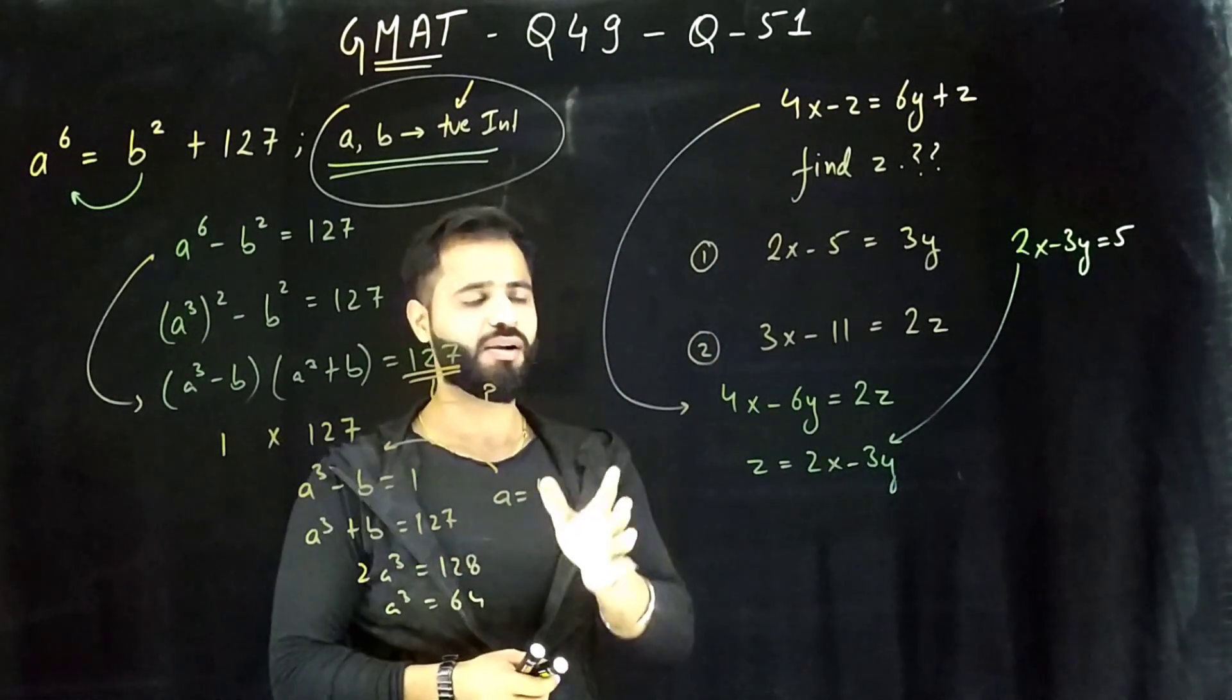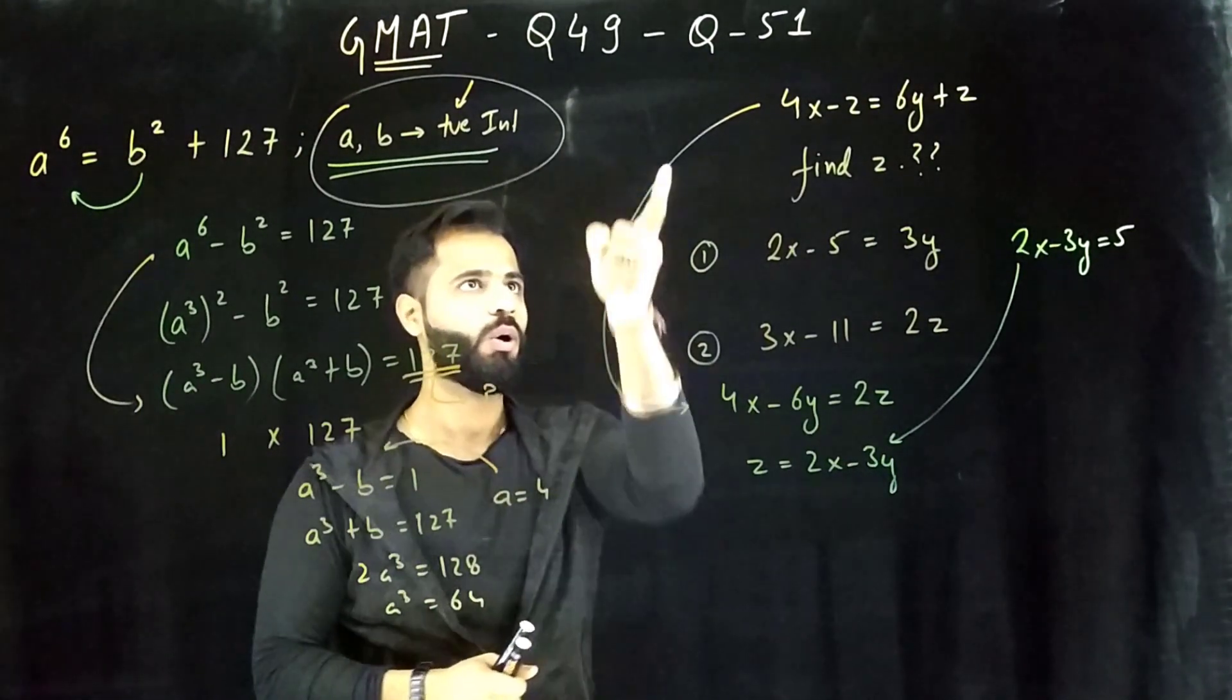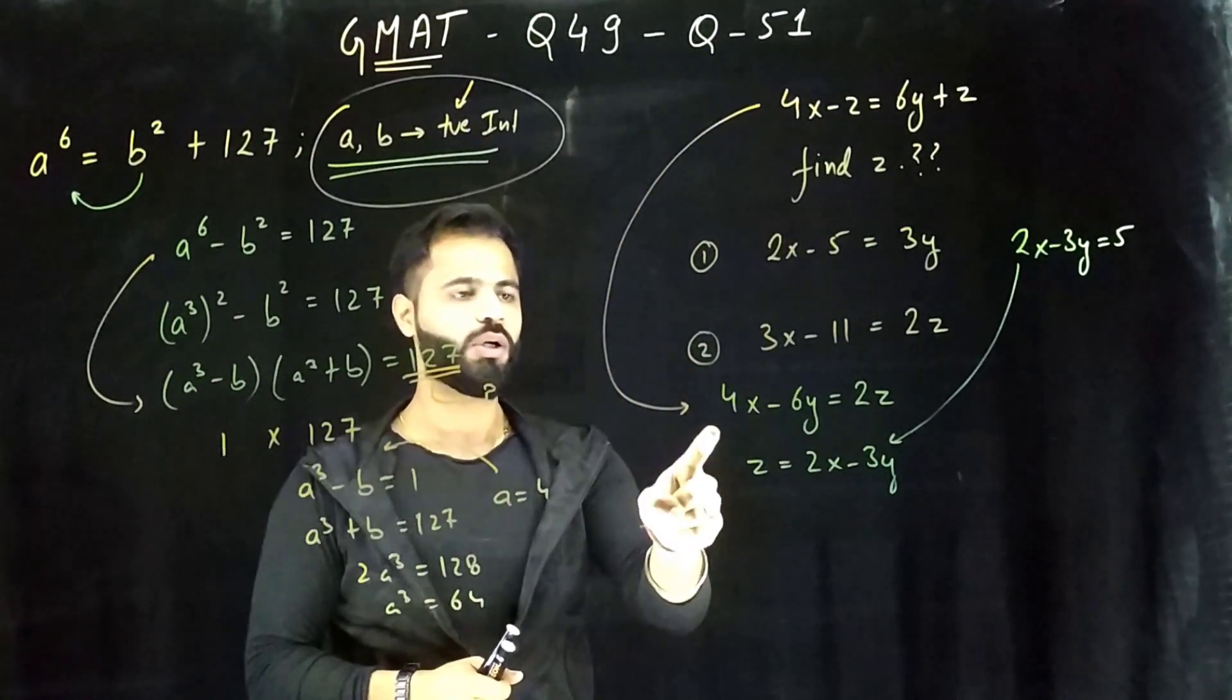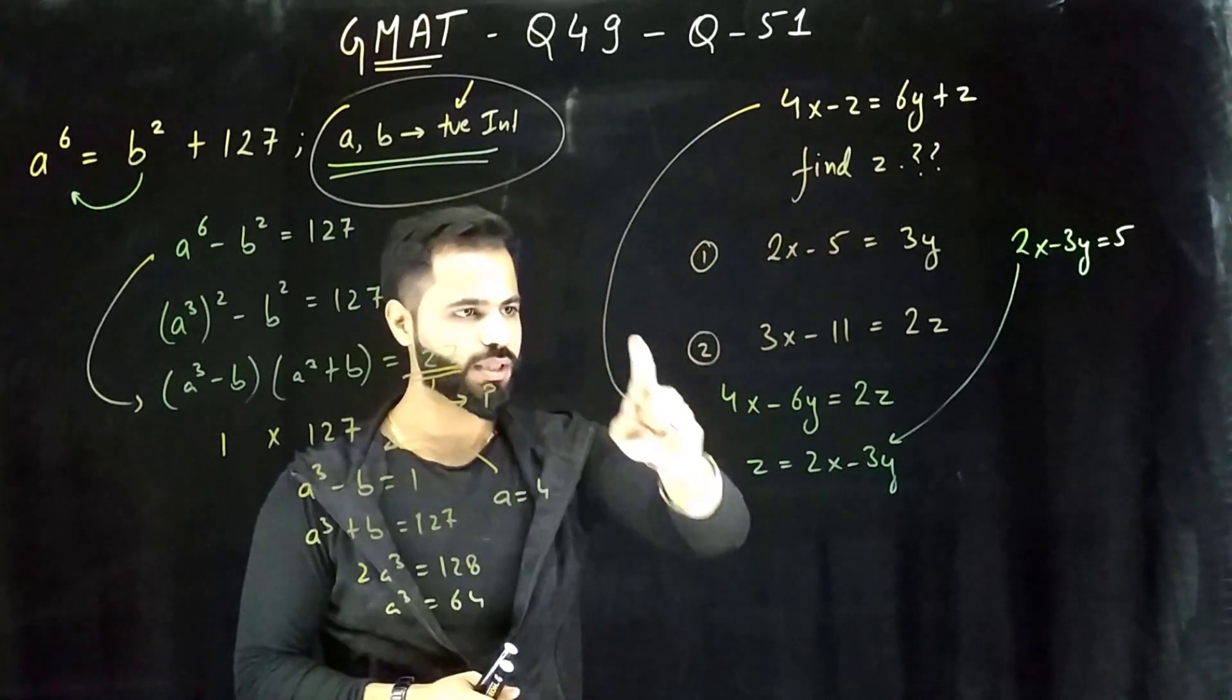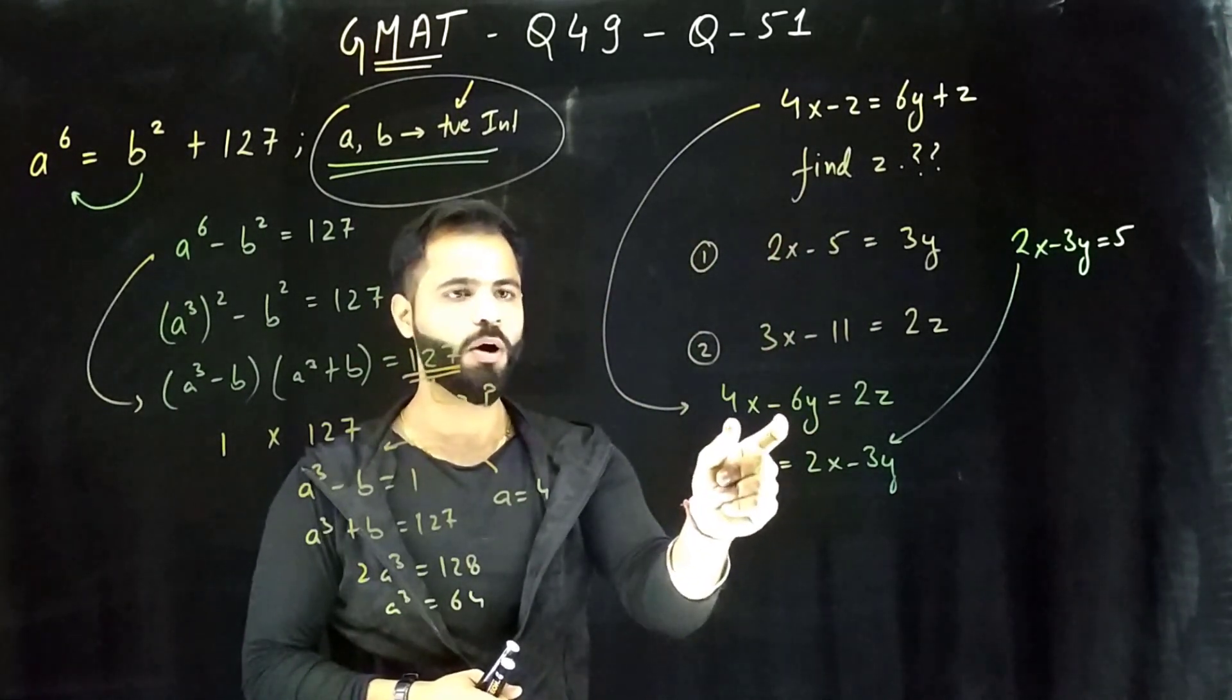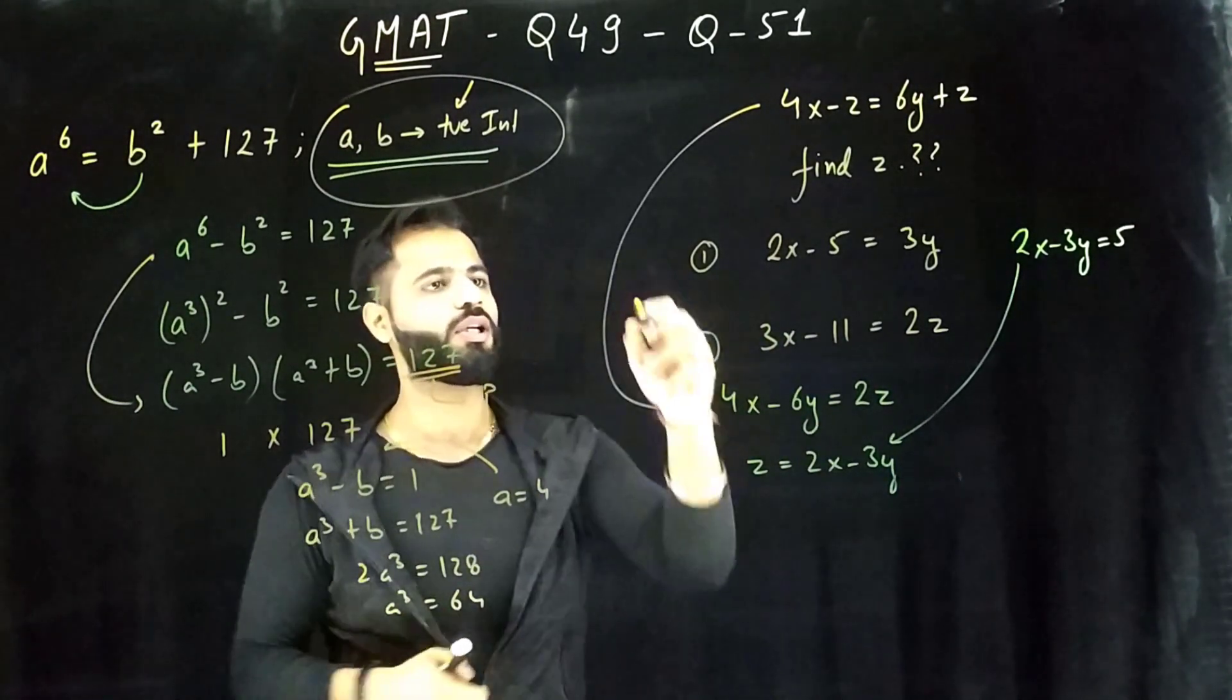It will include a lot of fractions and will try to confuse you. We'll see in later videos. But remember, always convert this into the basic statement. What was needed? Z. Convert this into such a form that z is all alone. Now this becomes sufficient clearly.